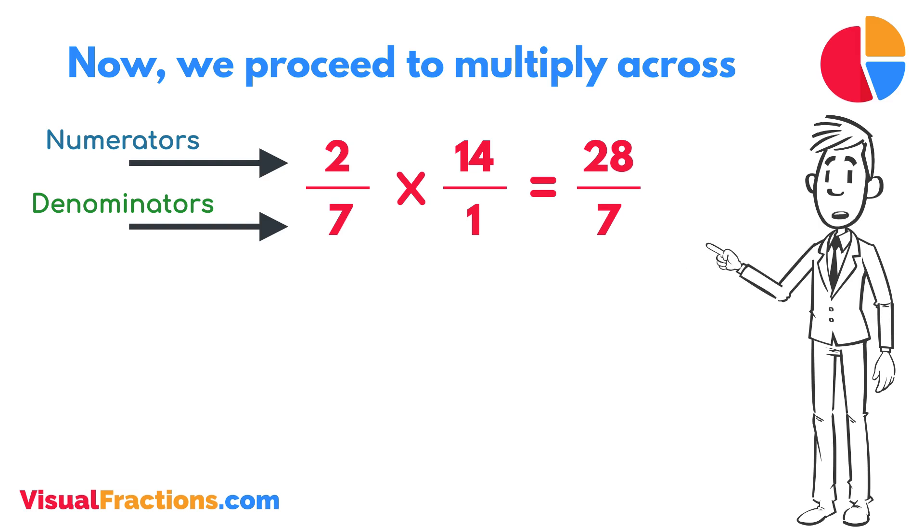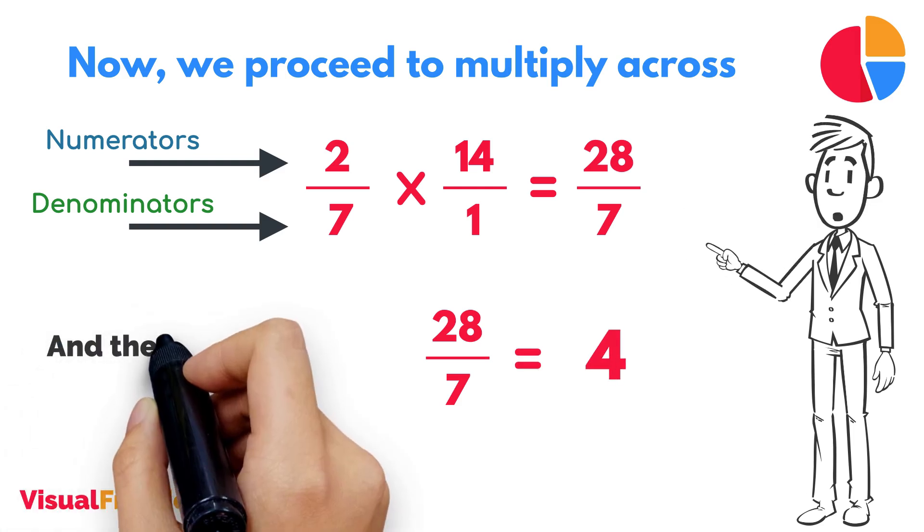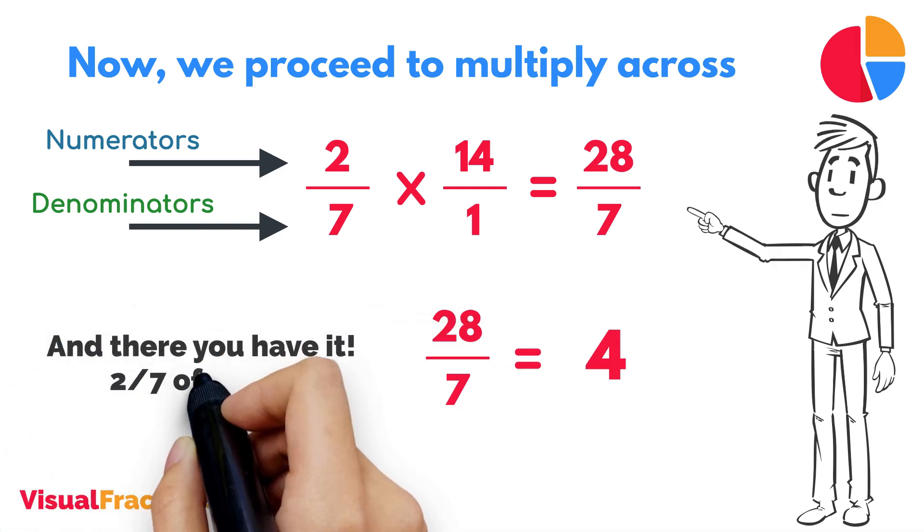We now have a new fraction, 28 7ths. To find the final answer, divide the numerator by the denominator. So, 28 divided by 7 equals 4. And there you have it. 2 7ths of 14 is 4.